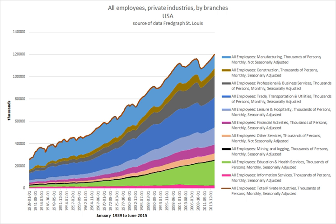Those who work under obligation for the purpose of fulfilling a debt, such as indentured servants, or as property of the person or entity they work for, such as slaves, do not receive pay for their services and are not considered employed. Some historians suggest that slavery is older than employment, but both arrangements have existed for all recorded history. Indentured servitude and slavery are not considered compatible with human rights or with democracy.